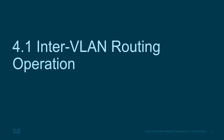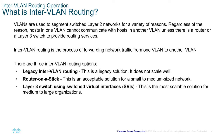Inter-VLAN Routing Operation: What is inter-VLAN routing? VLANs are used to segment switch layer 2 networks for a variety of reasons. Regardless of the reason, hosts in one VLAN cannot communicate with hosts in another VLAN unless there is a router or a layer 3 switch to provide routing services. By using VLANs, we are separating all devices into separate broadcast domains. Inter-VLAN routing is the process of forwarding network traffic from one VLAN broadcast domain to another.